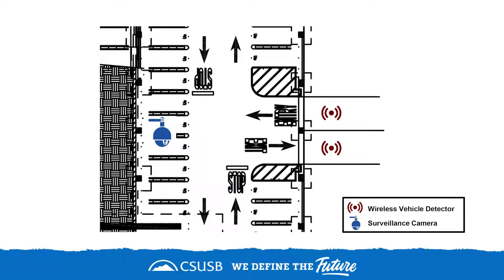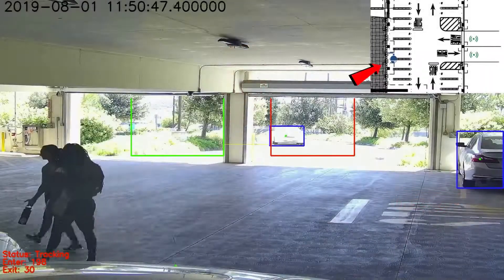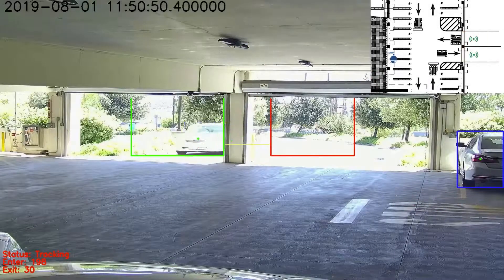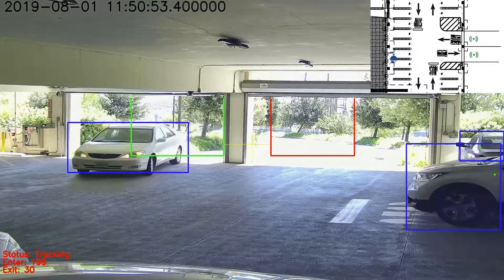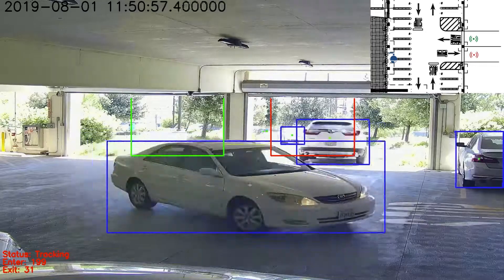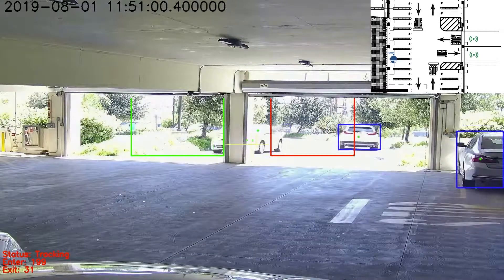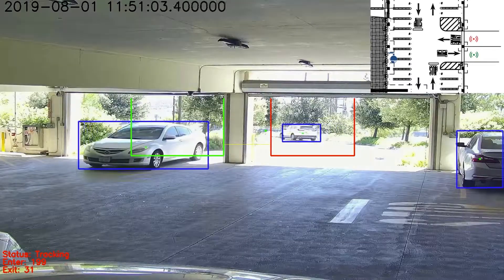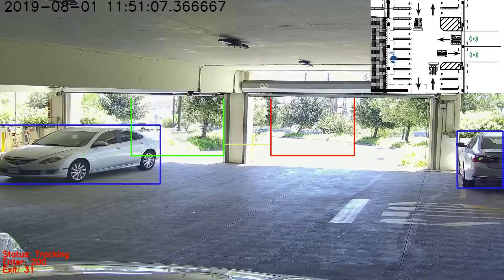Our system consists of three parts: wireless vehicle detectors, civilian cameras, and a web server. This floor plan shows the setup at one of the entrances. There is one camera pointing to the entrance, installed by campus police for security monitoring before this project. Two sensors were installed under each lane leading towards the parking structure. Our vehicle tracking algorithm processes the live video footage, with a boundary box showing the vehicle's location extracted from the background. By tracking the center of the boundary box, we can determine if a vehicle is entering or leaving the parking structure.